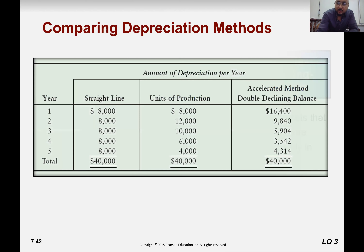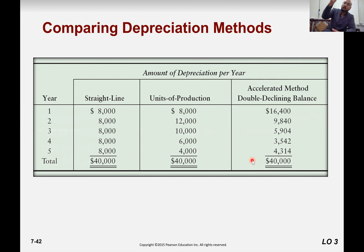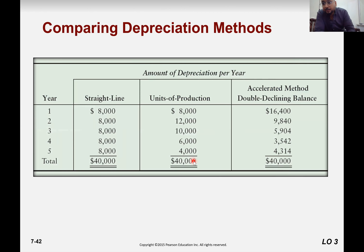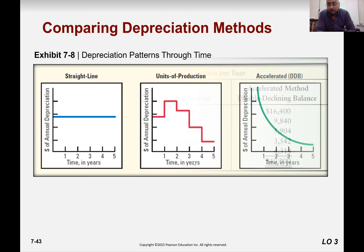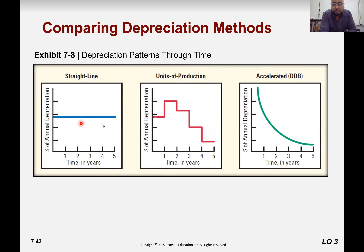Comparing the methods: the highest depreciation at the start of the year is seen in the double declining method. In later years, the double declining method produces less depreciation. With the unit of production method, the depreciation is not even — you don't see a regular pattern, as it varies according to usage. This is the graphical representation of straight-line, accelerated double declining, and unit of production methods.